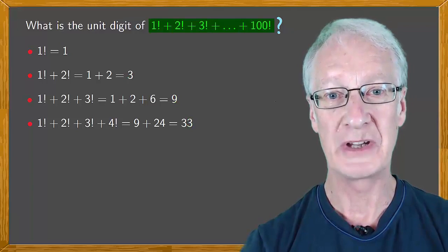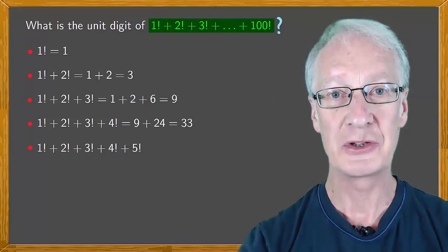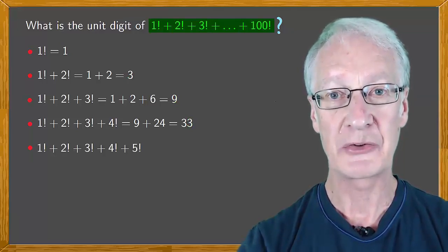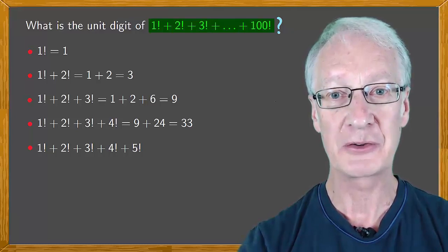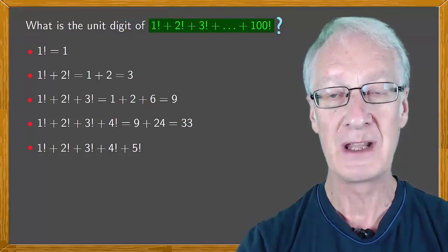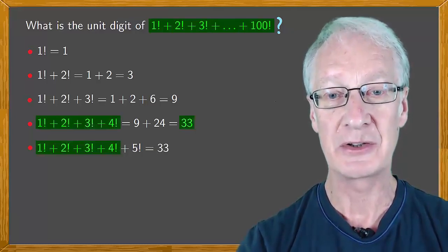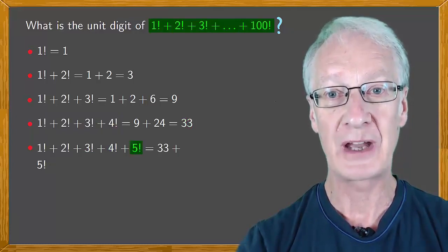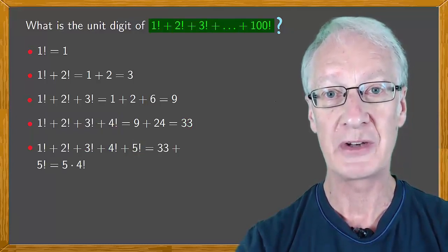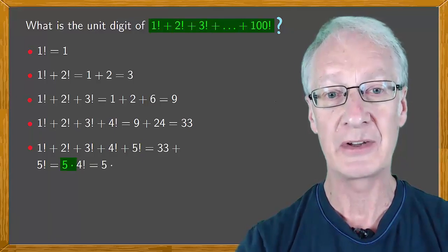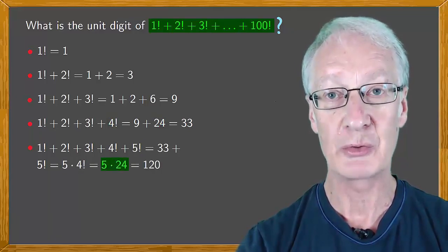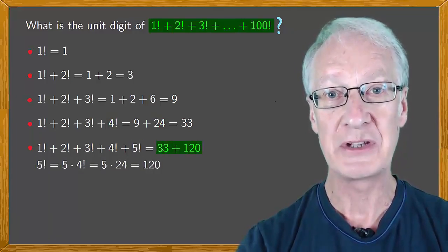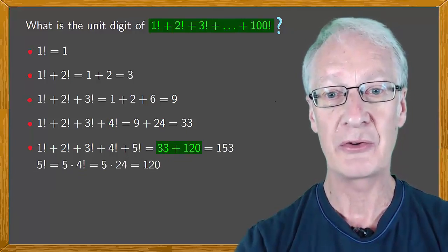So moving on to 1! + 2! + 3! + 4! + 5! is the previous result 33 plus 5! which is 5 times 4! or 5 times 24 or 120. So we have 33 + 120 which is 153.